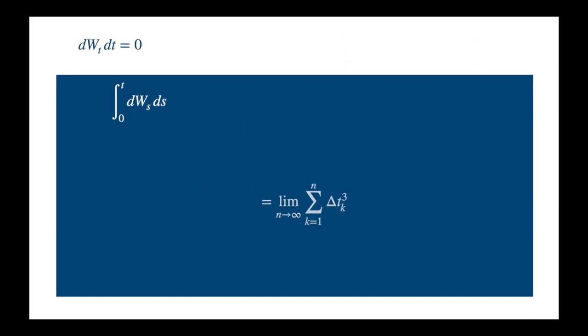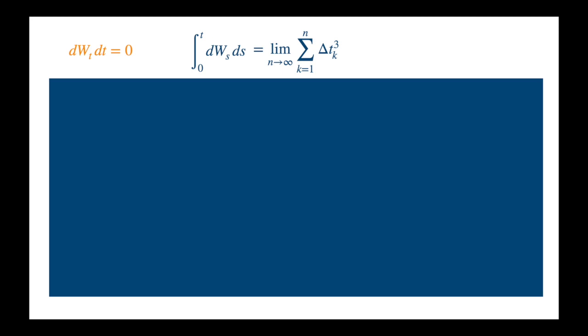Now as n becomes very large, this goes to 0. To see, let's consider the interval from 0 to 1.